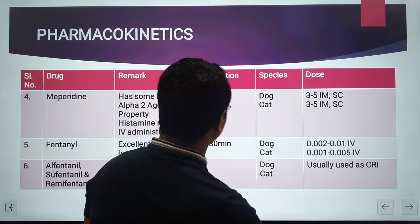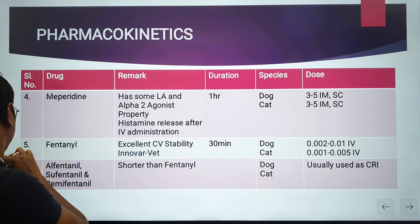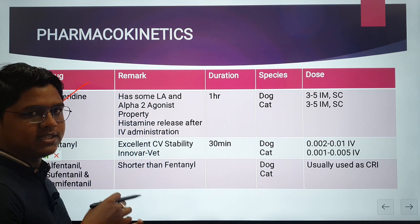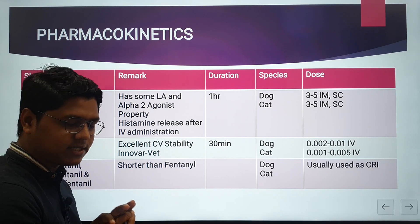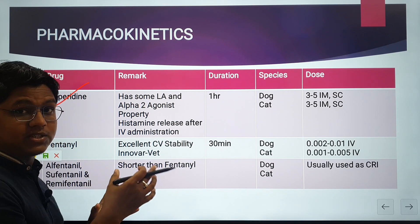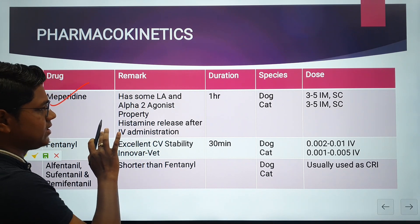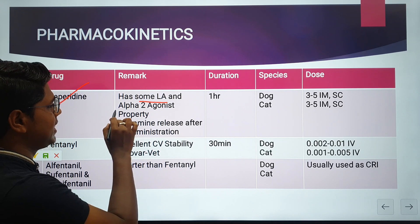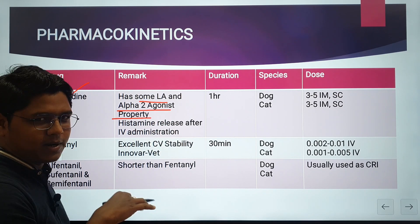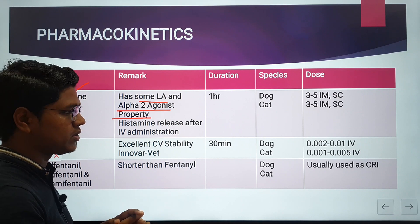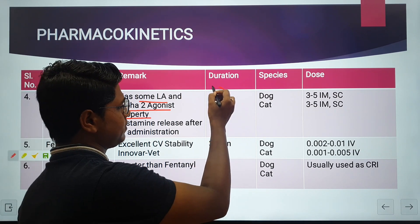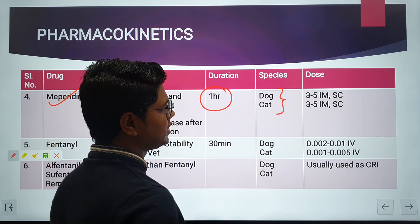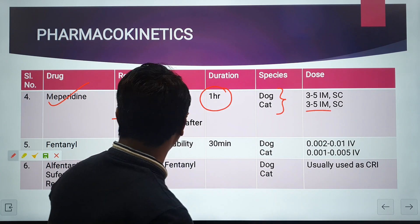Next is meperidine. As already mentioned, when given intravenously it releases histamine leading to vasodilation and hypotension. It also has some local anesthetic properties when given locally, and it acts on alpha-2 receptors to produce some effects. Duration of action is about one hour, generally less than morphine. It has been used in dogs and cats.